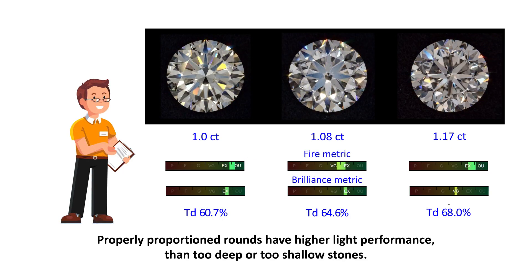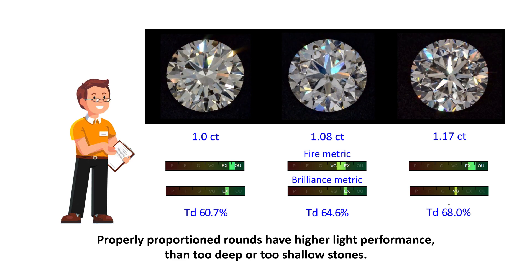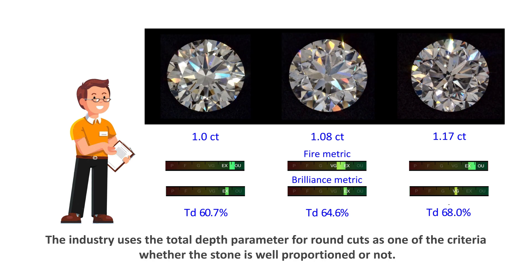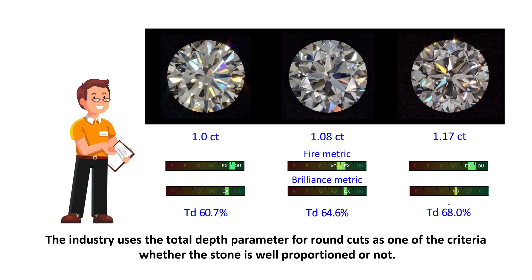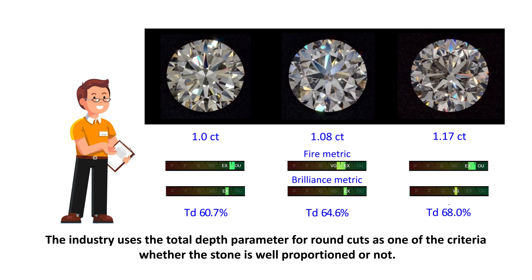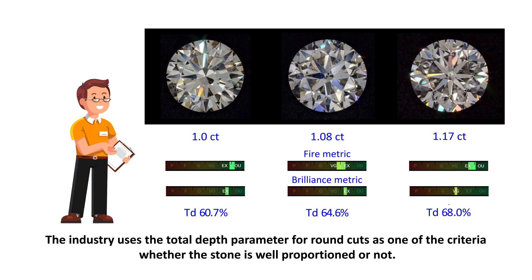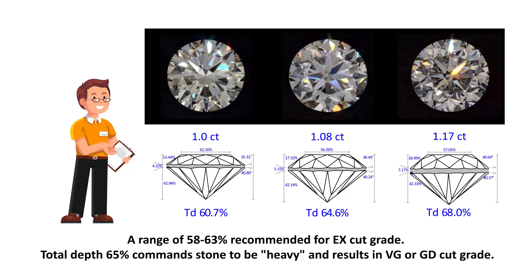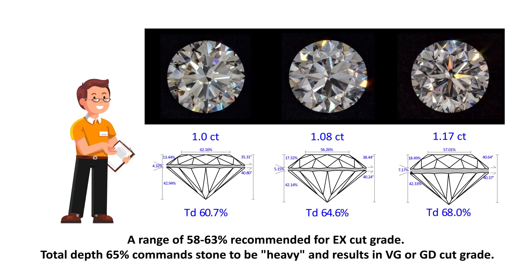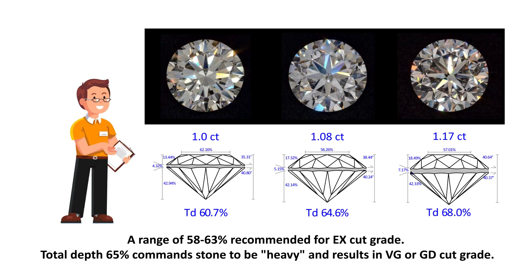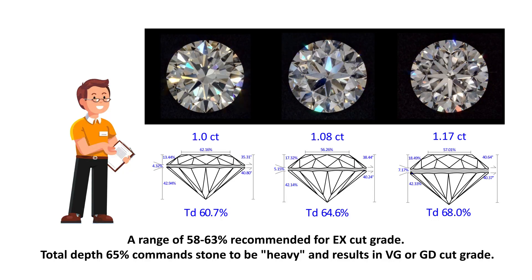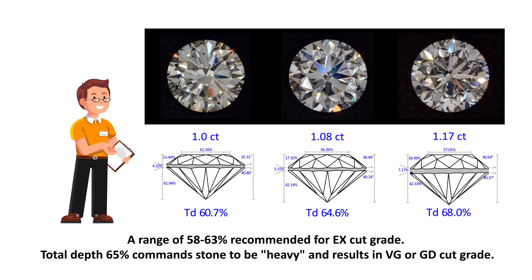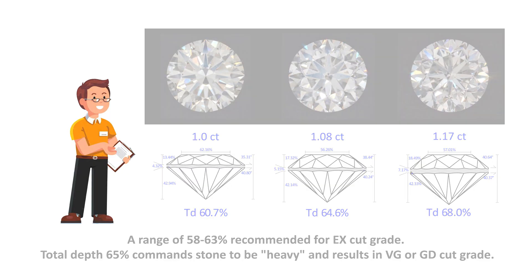Properly proportioned rounds have higher light performance than too deep or too shallow stones. The industry uses the total depth parameter for round cuts as one of the criteria for whether the stone is well proportioned or not. A range of 58% to 63% is recommended for an Excellent cut grade. A total depth of 65% makes a stone heavy and results in a Very Good or Good cut grade.